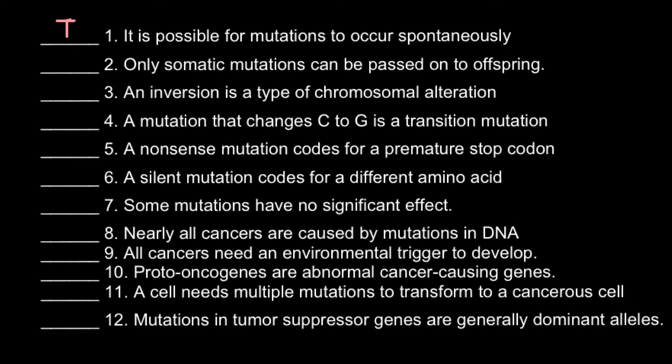Only somatic mutations can be passed to offspring — and this is a false statement. Because somatic cells are all the cells except germline cells. Germline cells produce gametes: male gametes are sperm and female gametes are egg cells. Only sperm or egg cells that carry a mutation would cause that mutation in progeny, and not other cells like skin cells.